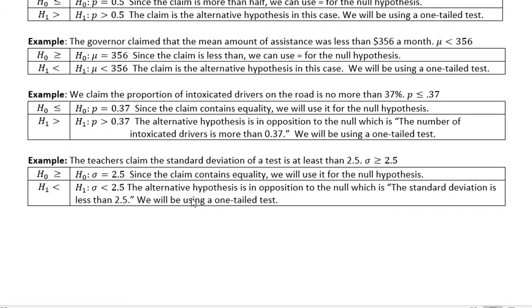The claim contains equality. That's really the thing you want to think about. If it has an equal to part in it, that's your null hypothesis. The alternative hypothesis is always in opposition to the null. And whenever you have something that's just a less than or greater than, you're using a one tail test. I hope this helps. Have a fantastic day. And don't forget to subscribe if you want to see as I post new videos.